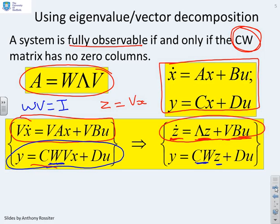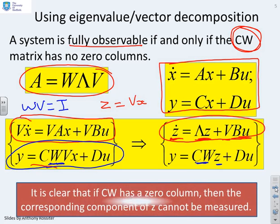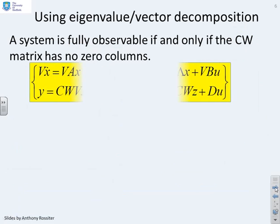So here's the key point. If cw has a zero column, then the corresponding value of z has no impact on the output y. So we'll restate that on this page here.